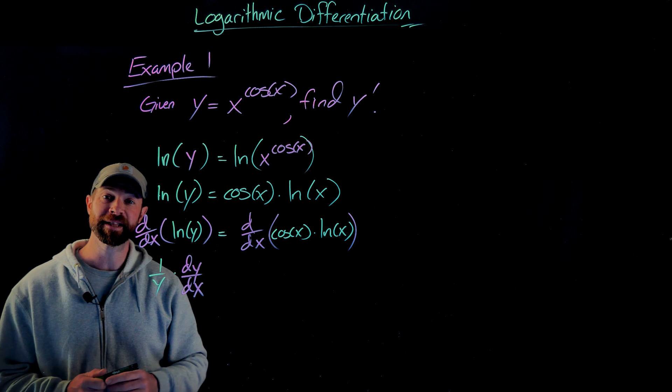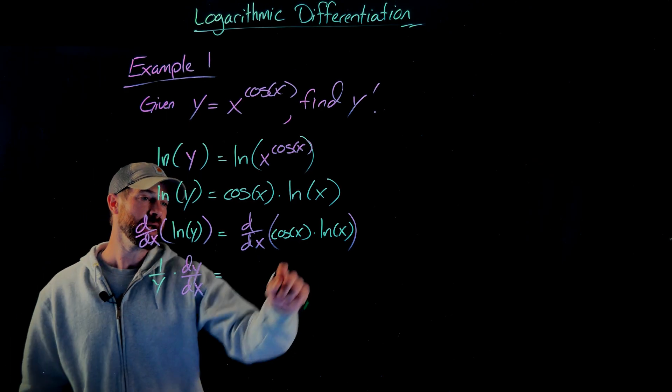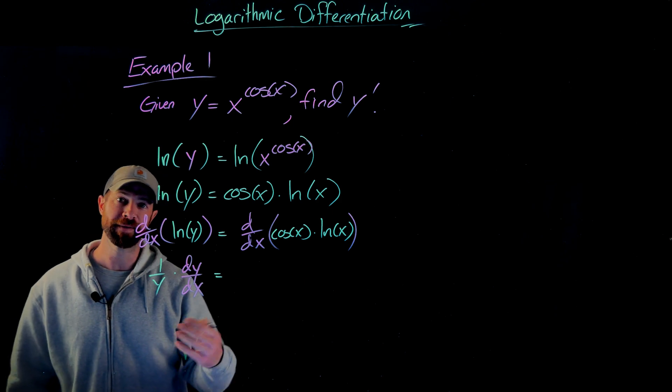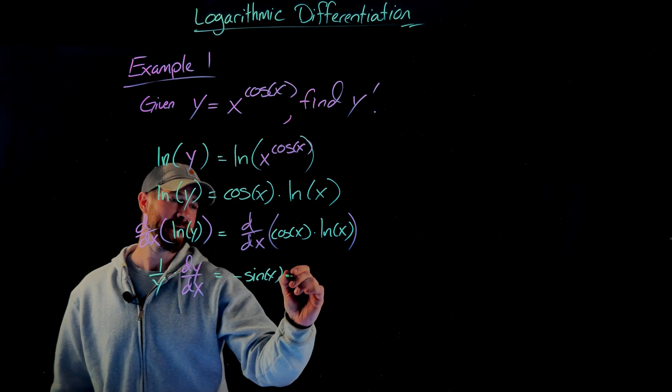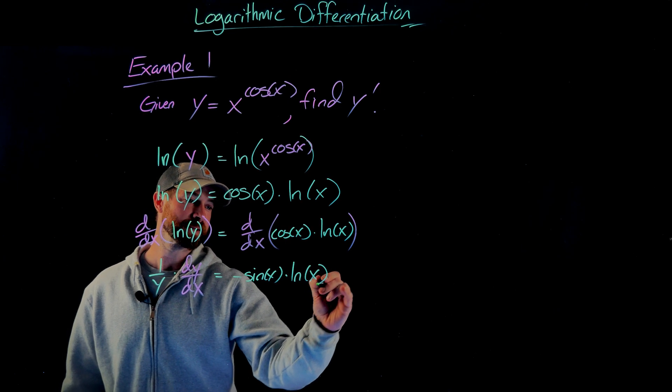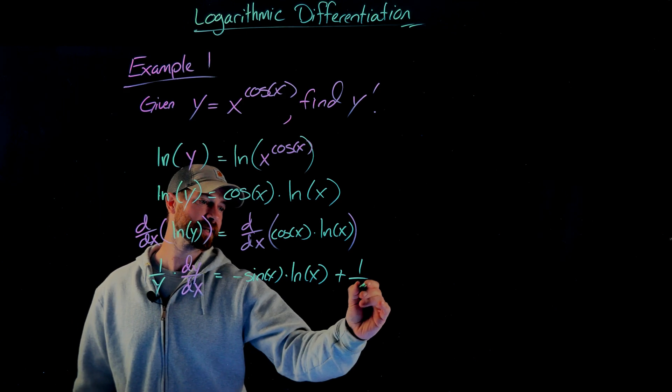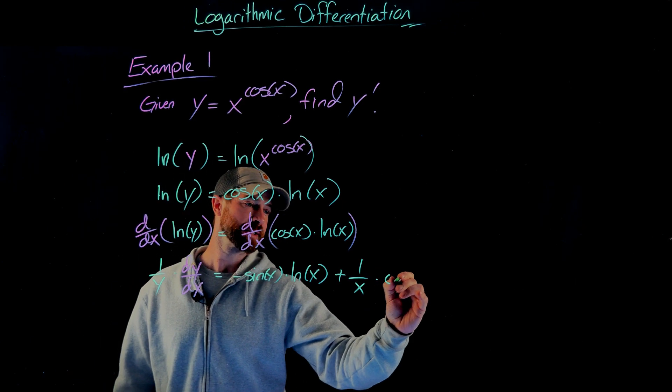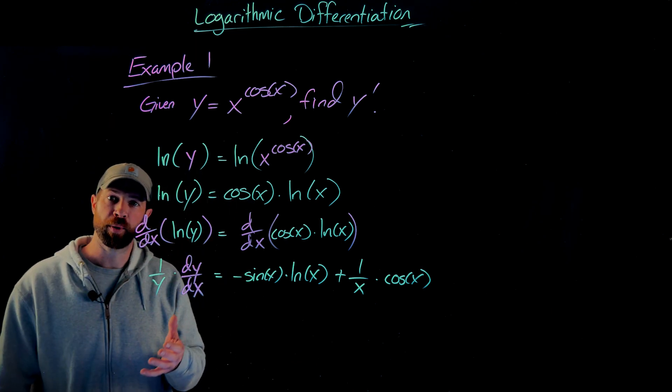Then when I differentiate this right side, I'm going to have to use the product rule. So in this case right here, I get the cosine of x. The derivative of that is negative sine of x. Multiply that by the natural log of x. In the second term, I'm going to take the derivative of the natural log, which is 1 over x, and multiply it by the cosine of x.